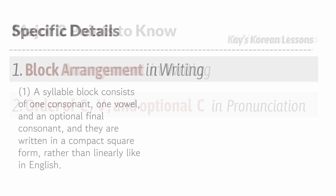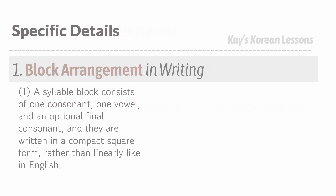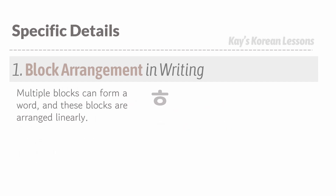Korean letters are written in blocks. Each block represents a syllable, contains a consonant and a vowel with an optional final consonant. The blocks are written in a compact, square form rather than linearly like in English.